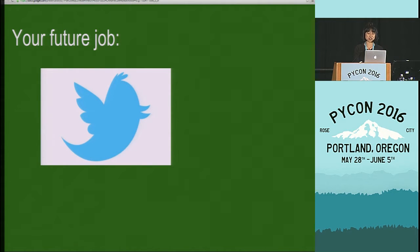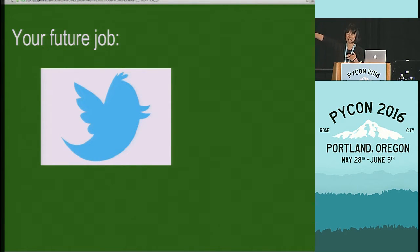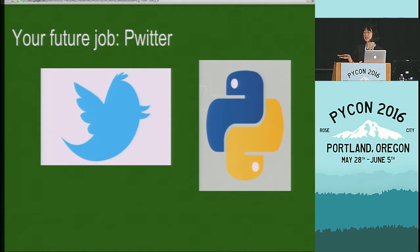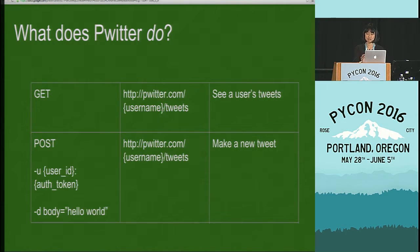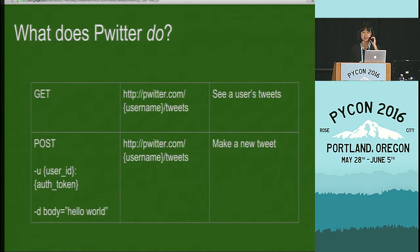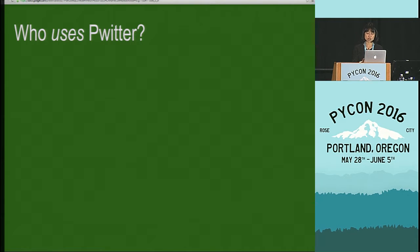Let's talk about you and your future job. Let's say you maintain a REST API for Twitter — a bare-bones service that gets and posts tweets without the styling of the website. This service is written in Python using Flask, and it's called Twitterer. So what does Twitterer do? Well, if you hit the URL and specify a user and hit the tweets endpoint, you'll see a user's tweets. Similarly, if you hit the same URL with a POST request, you can make a new tweet. You can only tweet if you're that user, so you have to supply your username and auth token, and also pass in a POST parameter which is the body of the tweet itself.